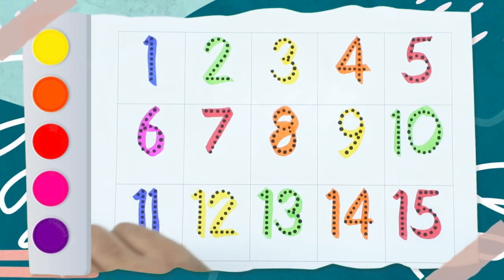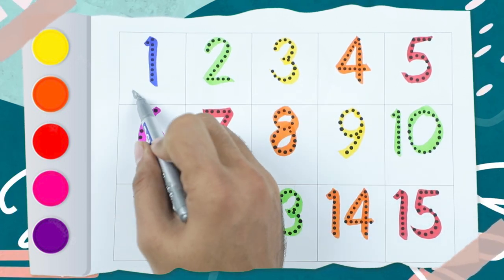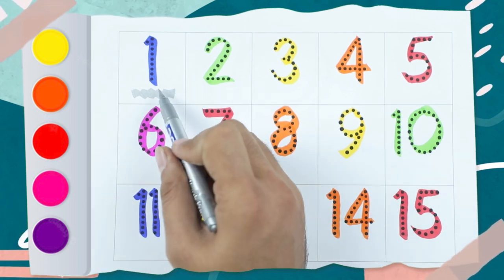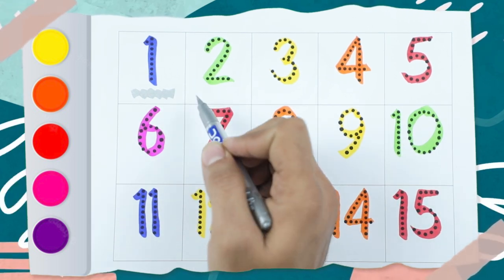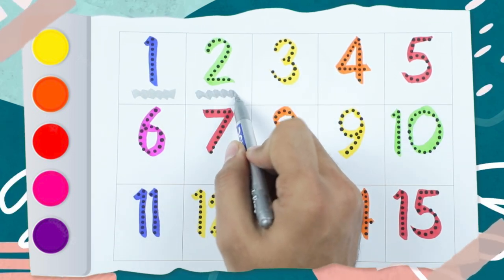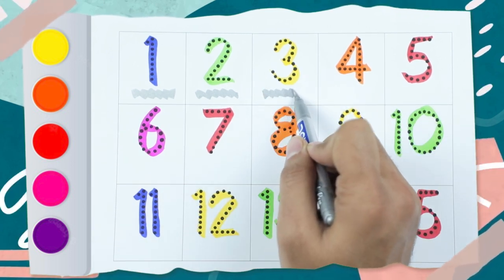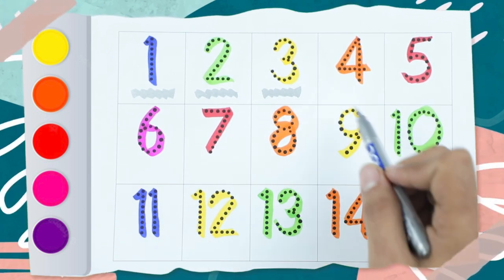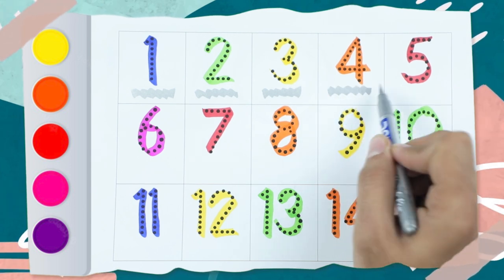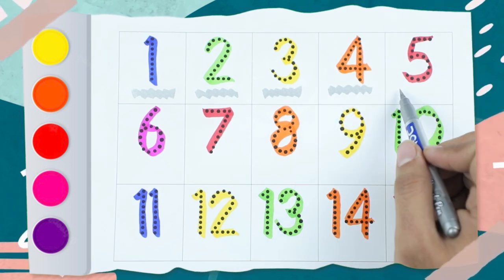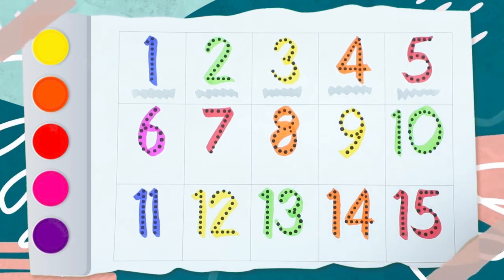Which number is this? 1, and color is blue. 1 number blue color, 2 number green color, 3 number yellow color, 4 number orange color, and 5 number is red.